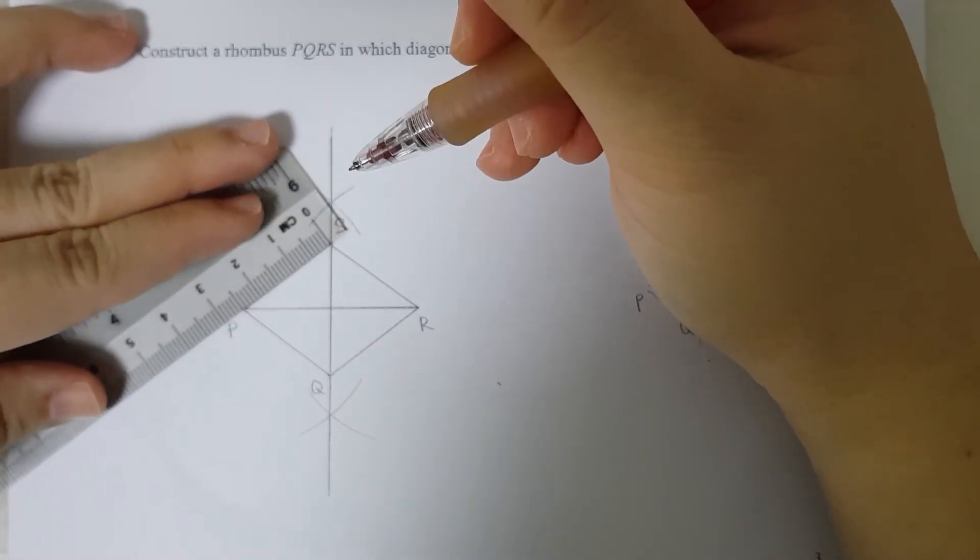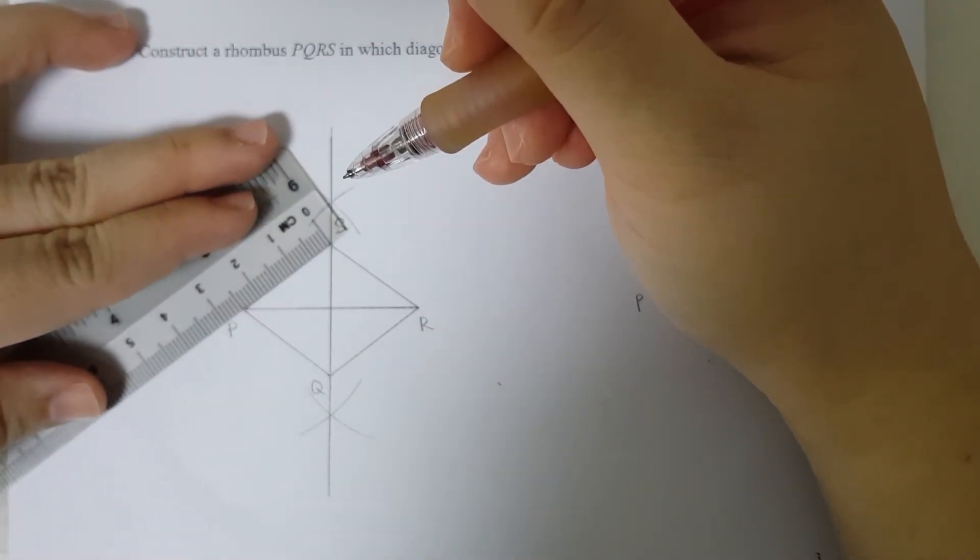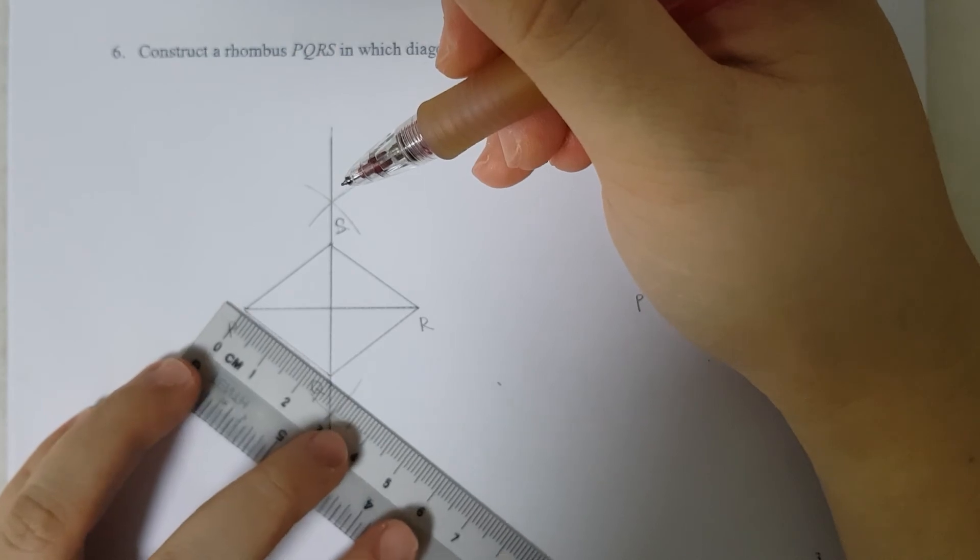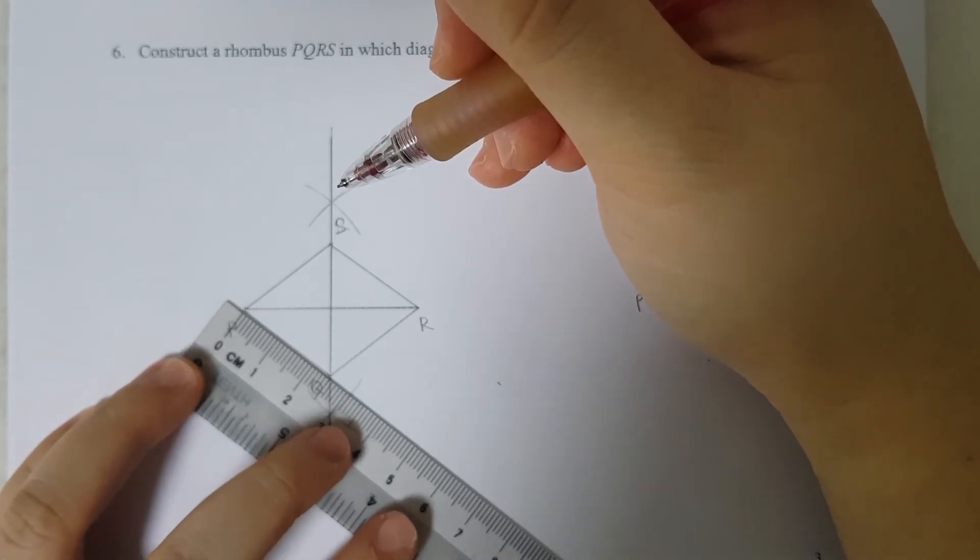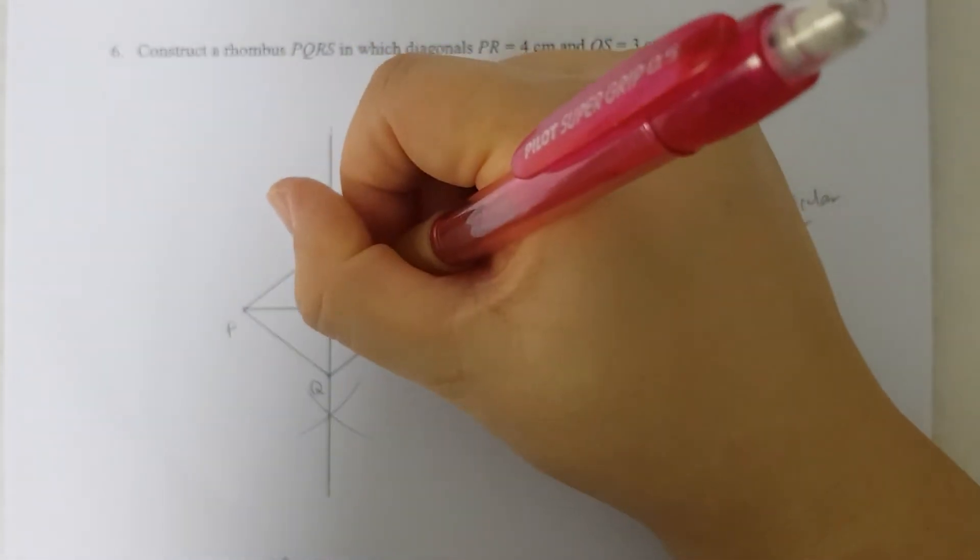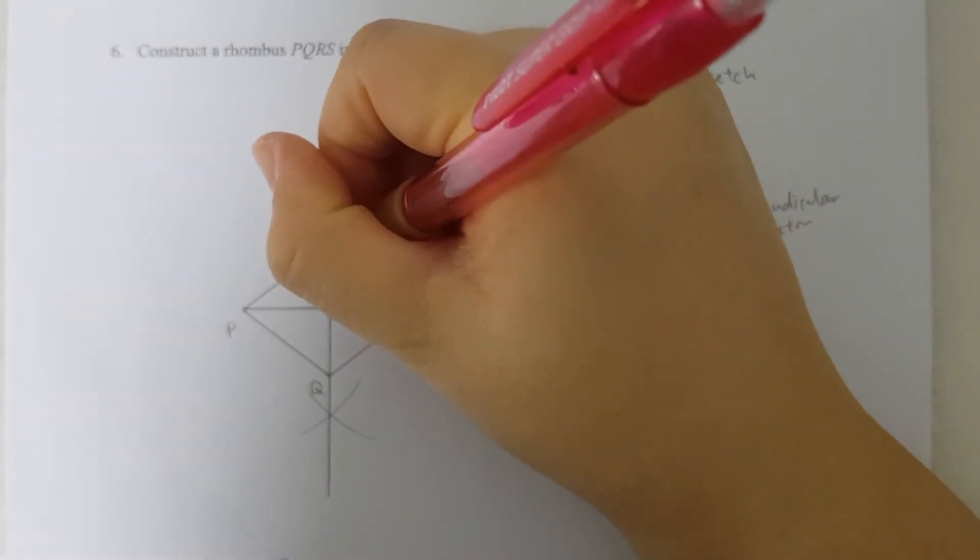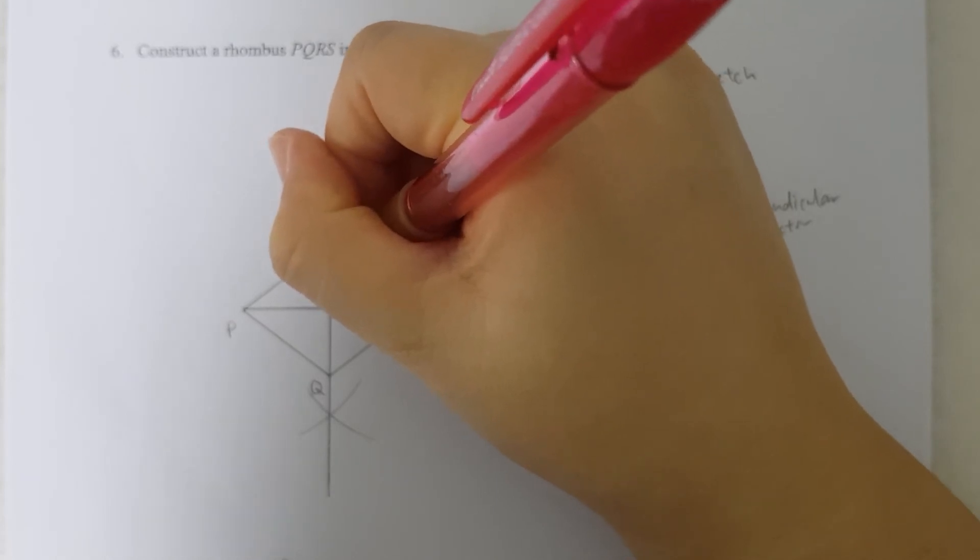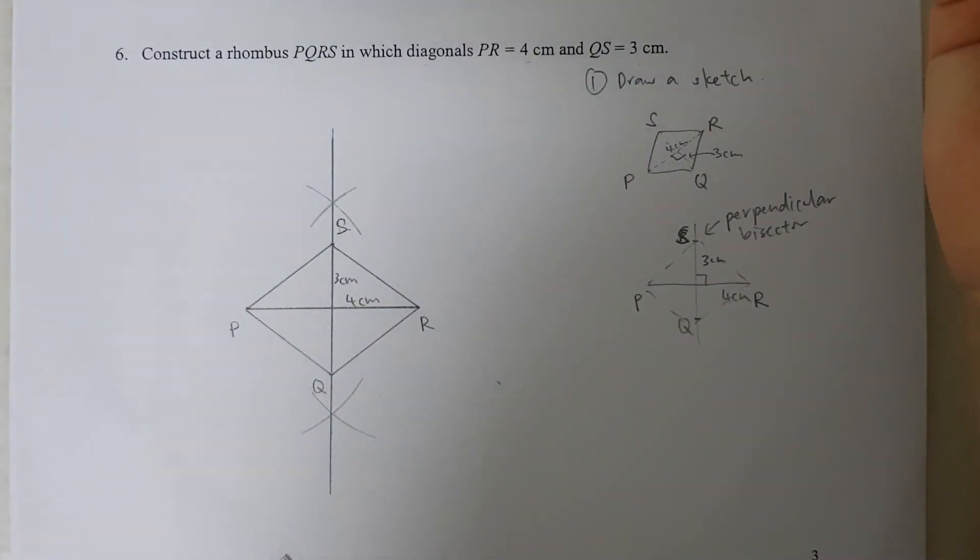2.5, 2.5, 2.5. So this is 4 cm, then QS is 3 cm. So this is my rhombus PQRS.